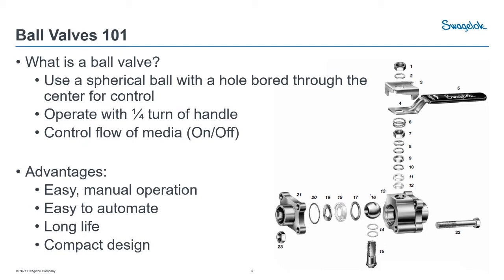Some of the advantages: it's easy manual operation and pretty easy to automate — your actuator just has to do a 90-degree turn. Ball valves have very long life when taken care of properly, they can be very robust, and it's a very compact design. You don't require a big spool of pipe like you would with a larger globe valve or needle. That's where the name comes from — the ball, number 16.